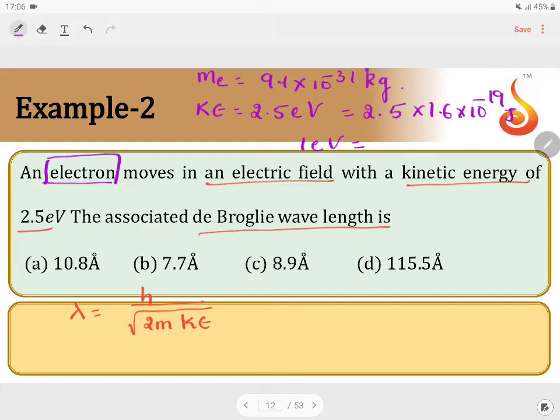1 electron volt is 1.6 into 10 power minus 19 joules. Using this conversion factor, we are going to convert kinetic energy in joules. Now what's the necessity? The simple reason is we know that the h value is...